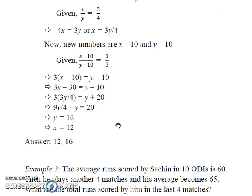On solving this expression we have 3x minus 30 equals y minus 10. Now as we already have an expression for x which equals 3y by 4, therefore if we plug in this value of x in this equation we will end up with this equation in variable y. On solving it we get y equals 16. Plug this value of y here and you will get x equals 12. Therefore the numbers are 12 and 16.